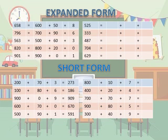Our next topic is expanded form. When we expand a number using their place values, it is called expanded form. For example, 658: 6 is at the 100s place, 5 is in the 10s place, and 8 is in the 1s place. So expanded form is 600 plus 50 plus 8.